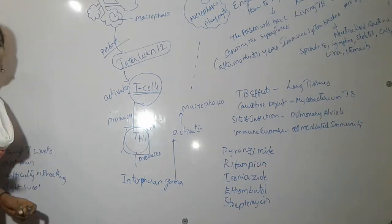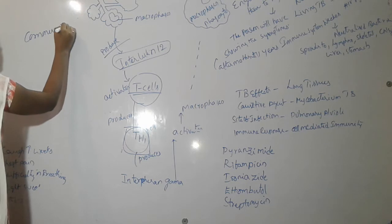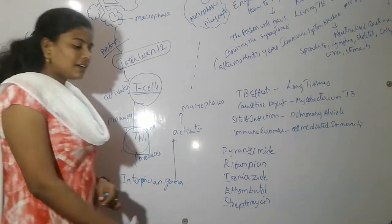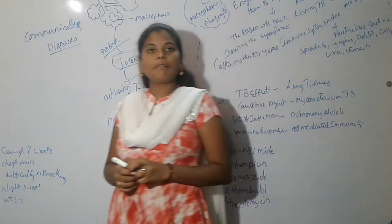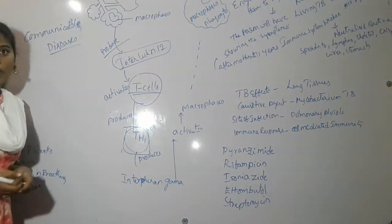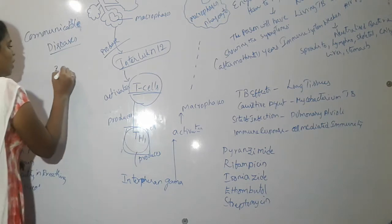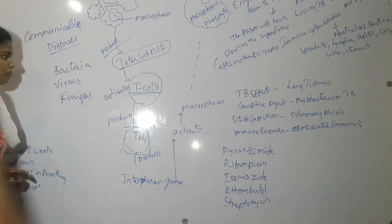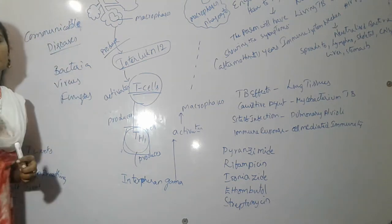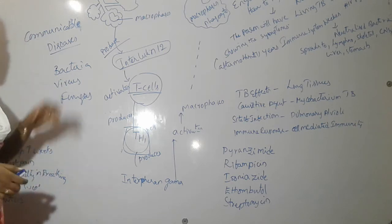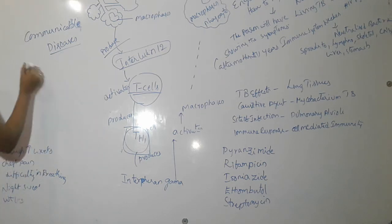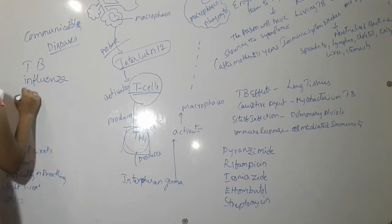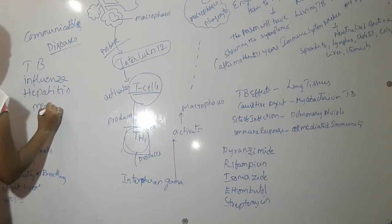Good evening. Now I am going to discuss about communicable diseases. What are the communicable diseases? Communicable diseases spread from one person to another person by organisms like pathogens — bacteria, viruses, and fungus. Those are called communicable diseases. Best examples of communicable diseases are tuberculosis, influenza, hepatitis, measles, etc.